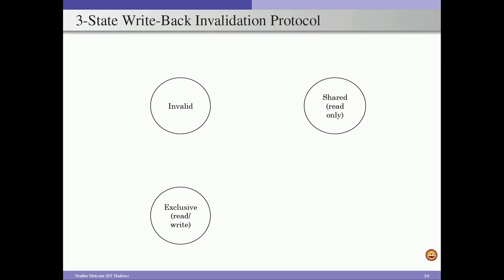Now we are going to discuss a three-state cache coherency protocol for write-back caches using an invalidation-based mechanism. In the three-state write-back invalidation-based protocol, we have invalid state, shared state, and exclusive or modified state. We have state information for each of the blocks present in the cache, and state transitions happen based on the protocol — now we will see how state transitions happen with an invalidation-based protocol.